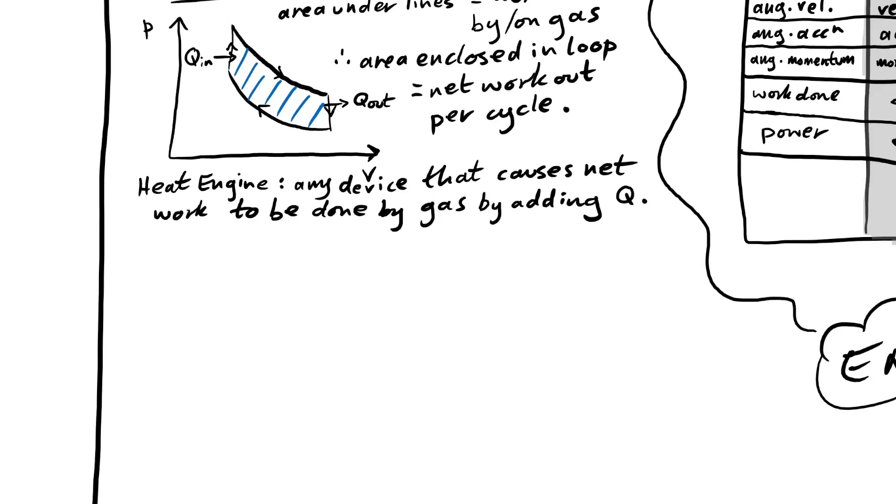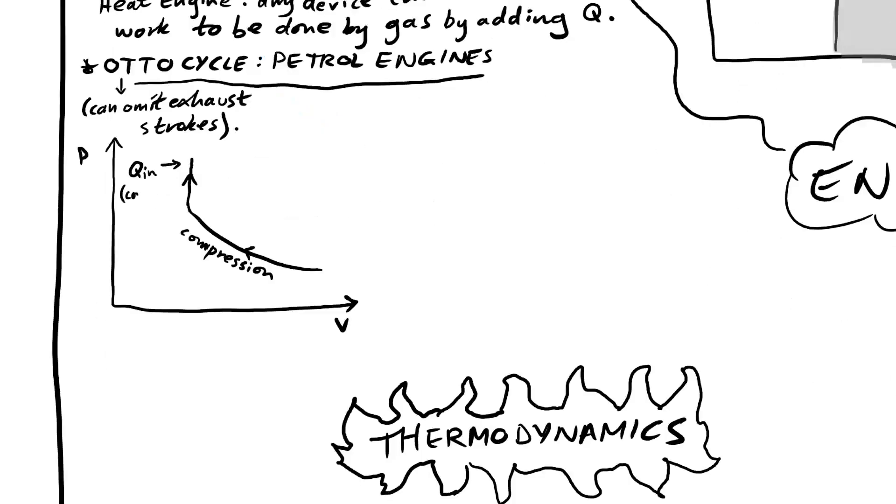So a heat engine is the name that we give to any device that causes net work to be done by a gas by adding heat. Of course, we use these in cars. So an Otto cycle is the diagram that can be used to show what happens inside of a petrol engine. Of course, we have a piston in a cylinder. First, we compress the gas and then we add in heat that is done by the fuel and air mixture combusting thanks to the spark plug. That puts heat into the gas, but then the piston is allowed to move and we have the power stroke. That's what then drives the wheels essentially. And of course, we have heat out then as we exhaust the spent gases.